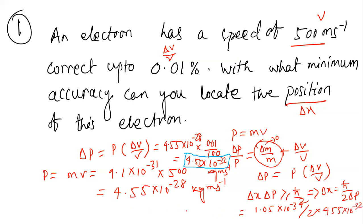This gives approximately 2.318 nanometers (10⁻⁹ m). That's how we find the uncertainty in position for this first question.